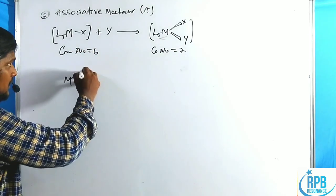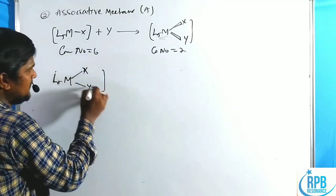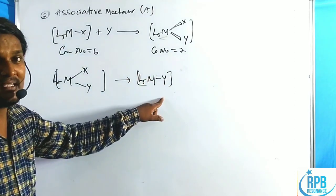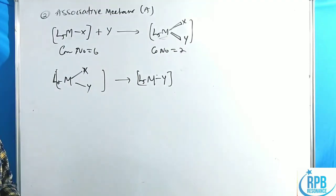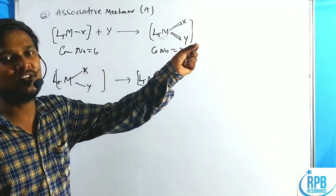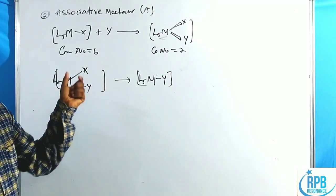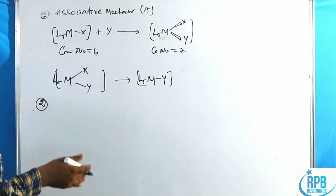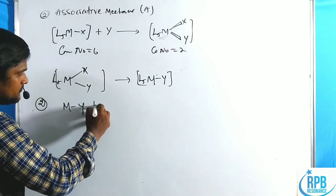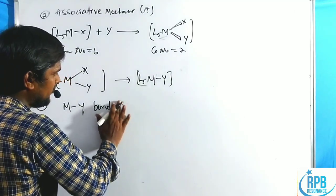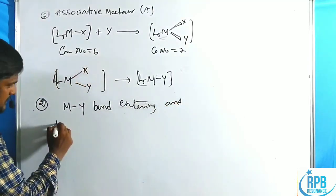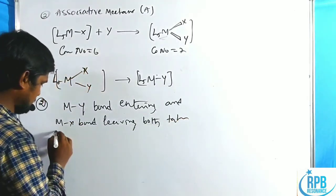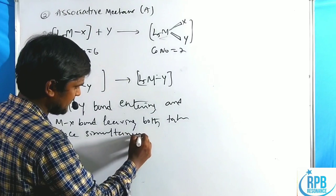In the next step, the X group is eliminated and ML5Y is formed. The formation of the MY bond and the breaking of the MX bond both take place simultaneously. This contrasts with the dissociative mechanism where MX is fully broken first. The mechanism proceeds by association, with both entering and leaving processes overlapping.